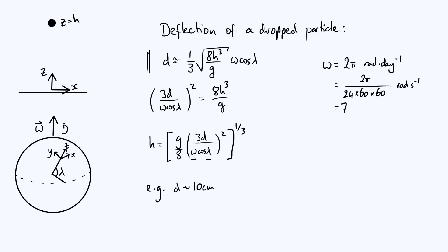And that comes out to be a very small number, 7.3 times 10 to the minus 5 radians per second, roughly speaking.